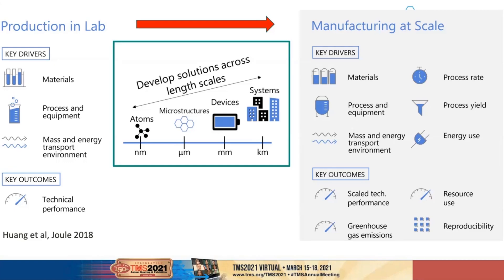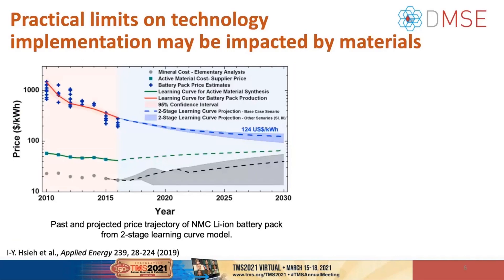The first topic is materials availability — why do we care? It's their impact on price. A figure by Professor Chang and Professor Green at MIT shows price of lithium-ion battery packs in dollars per kilowatt-hour on the y-axis as a function of time. They found that materials costs might set a practical lower bound on battery price, constructing a two-stage learning curve. The figure shows past and projected price trajectories, and you can see the learning curve in blue starts to approach the materials costs shown in green, supported by the gray period below.